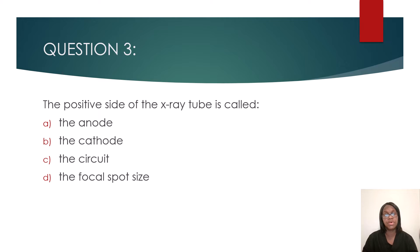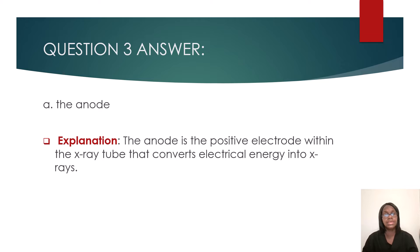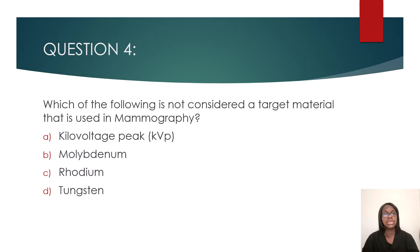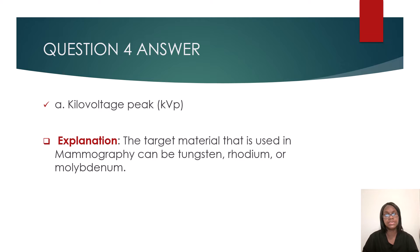Question three: the positive side of the x-ray tube is called — the anode, the cathode, the circuit, or the focal spot size? The answer is the anode. The anode is the positive electrode within the x-ray tube that converts electrical energy into x-rays. Question four: which of the following is not considered a target material used in mammography — KVP, molybdenum, rhodium, or tungsten? The answer is KVP. The target materials used in mammography are tungsten, rhodium, and molybdenum.